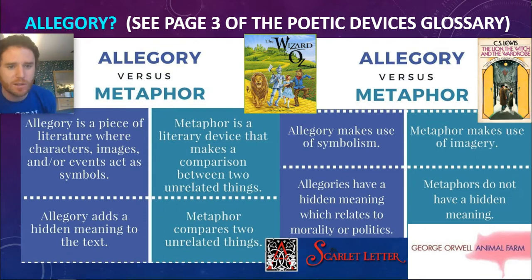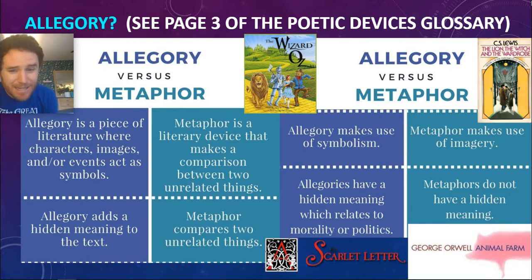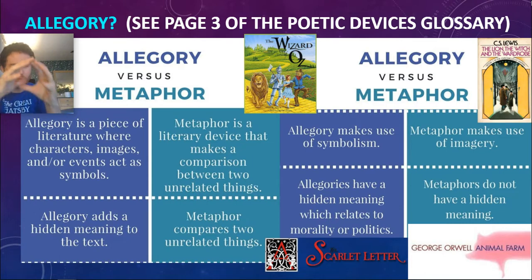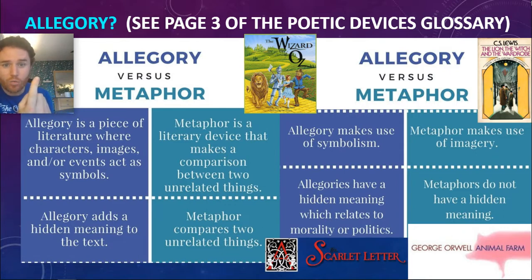These are books that tell one story on the surface, but a political subtext is underneath. It's a piece of literature where characters, images, and events act as symbols, adding hidden meaning to the text. It uses symbolism, but it's broader and more general than just symbols. Allegories have hidden meaning, which relates to morality — the fight for right and wrong — or politics, the struggle for power.